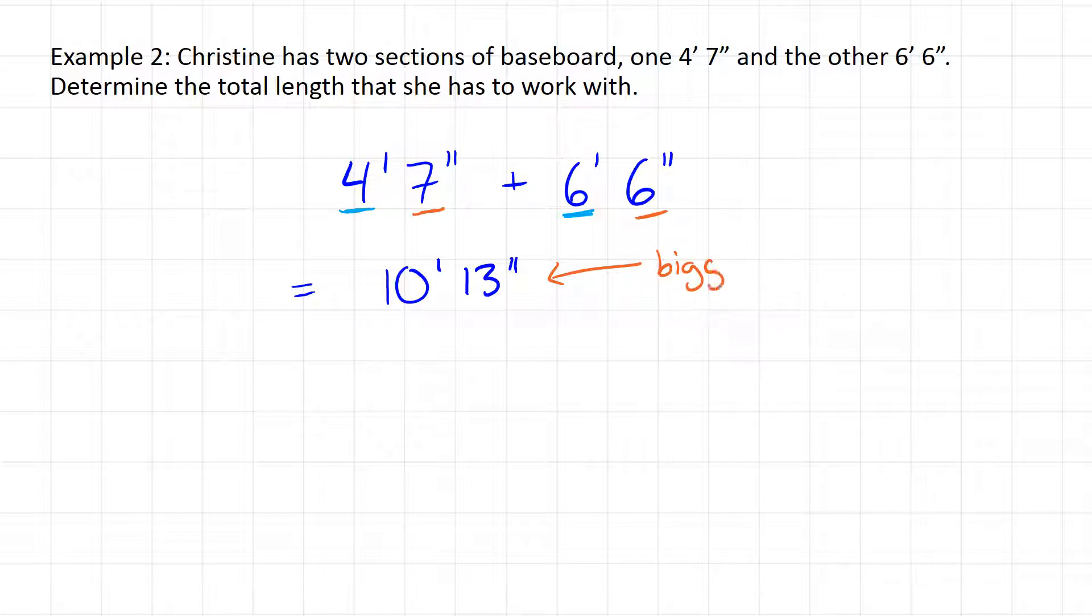So we have to make a little adjustment here. Instead of writing 10 foot 13, we're gonna take 12 of those inches from 13 and we're gonna turn that into a foot, and we're gonna have one inch left over. So this is really the same as 11 feet 1 inch, or 11 foot 1.